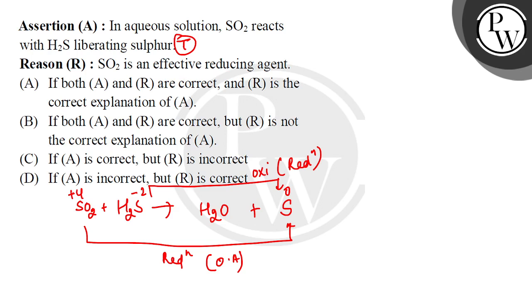Reducing agent reduces others and oxidizes itself. So what is SO2 doing? It is plus four to zero. So it is reduced. So this is not a reducing agent. It is an oxidizing agent.